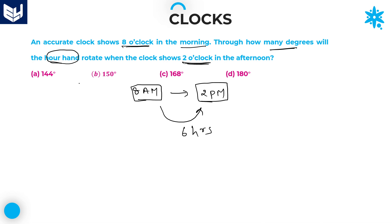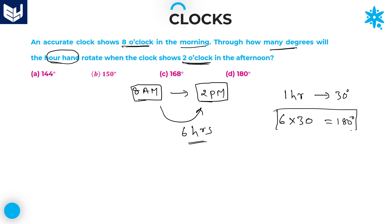We know that the hour's hand will cover 30 degrees for every 1 hour. We want to find the angle from morning 8 o'clock to afternoon 2 p.m. The total time period is 6 hours. If 1 hour equals 30 degrees, then 6 hours equals 6 × 30 = 180 degrees. So the angle covered by the hour's hand in this duration is 180 degrees. Option D is the right answer.